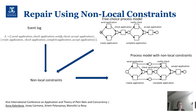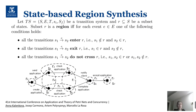Having this false free choice relation, we can repair our free choice model with additional constraints — for instance, additional places that model long-distance dependencies. To discover these places, we use the state-based region synthesis technique. A region is a subset of states of the system such that for each event, all transitions labeled by that event belong to one and only one group. The first group is the group of entered transitions, where all source states are outside the region and all target states are inside.